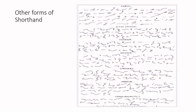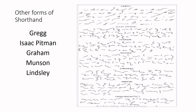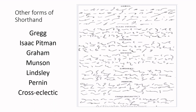Other forms of shorthand include Gregg Shorthand, Isaac Pitman Shorthand, Graham Shorthand, Monson Shorthand, Lindsley Shorthand, the Pernin, and the Cross-Eclectic Shorthand.